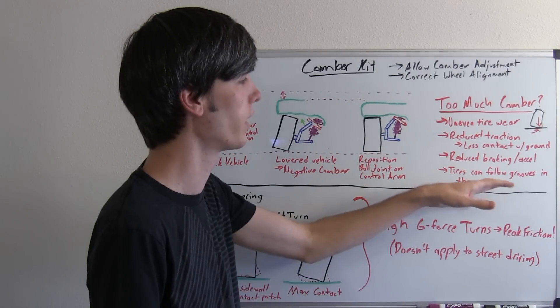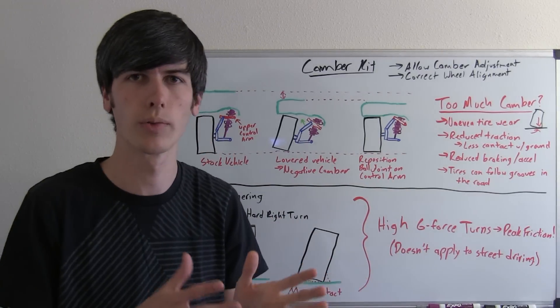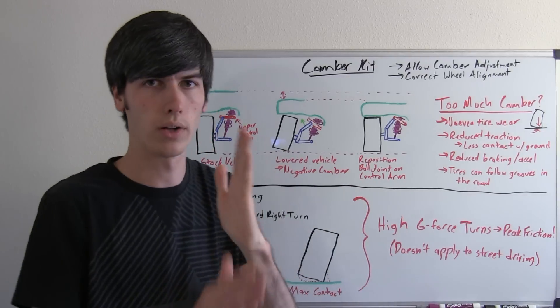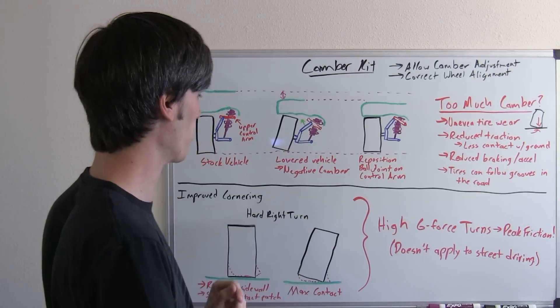And then one other thing that could happen is your tires could tend to follow grooves in the road. If all the weight's in one very narrow spot, it'll just kind of follow the road more.